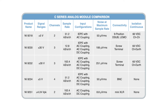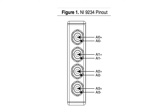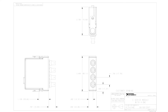The dynamic range of this module is 102 decibels. The input channels sample at rates as fast as 51.2 kilo samples per second. The NI9234 comes equipped with built-in anti-aliasing filters that have the capability of automatically regulating to the sample rate the user specifies.